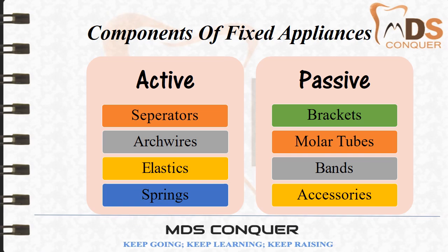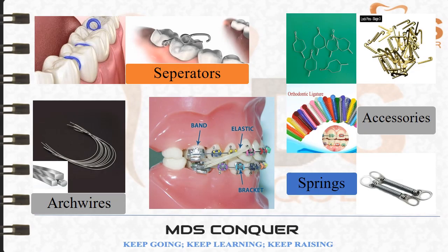We'll see each of the components one by one in detail. The separators can be either elastic separators or metal separators known as Kesling separators, mostly made up of brass wires.